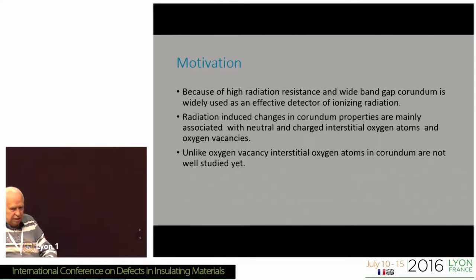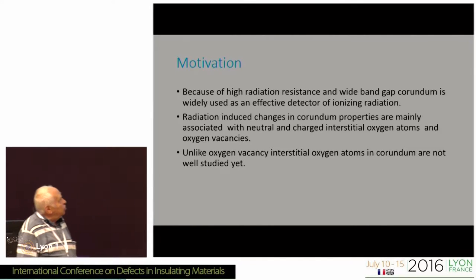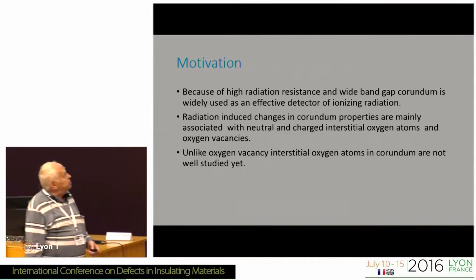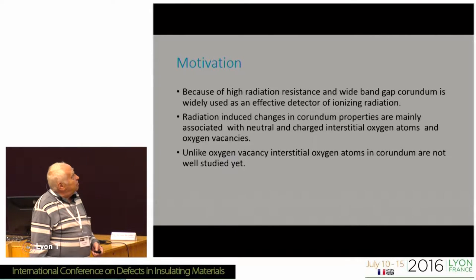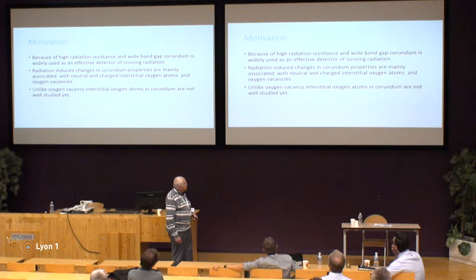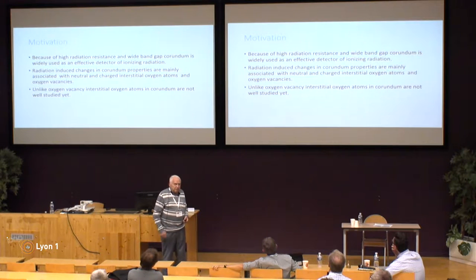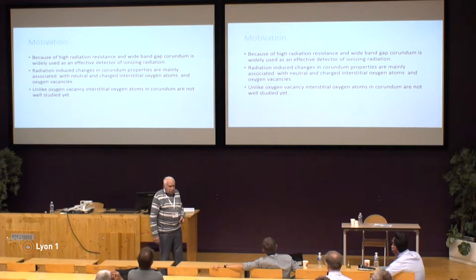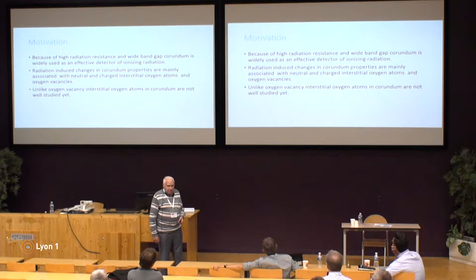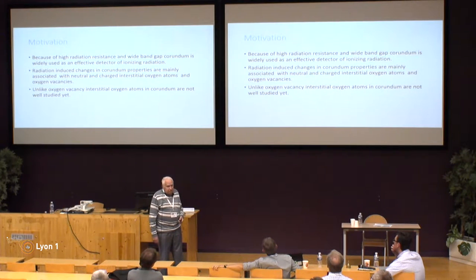Why have we chosen interstitial oxygen in Corundum? Corundum has very high radiation resistance, and radiation produces different nature point defects in Corundum. The most important are interstitial atoms and vacancies. Vacancies — in particular the famous F-center — are studied more than interstitial atoms. That is why we consider interstitial oxygen atoms in Corundum.